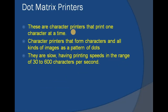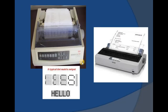Dot matrix and daisy wheel are character printers that print one character at a time. We also have line printers that print one line at a time. In dot matrix printers, due to mechanical movement, one character is printed at a time. These character printers form characters and all kinds of images using a pattern of dots. Their capability ranges from 330 to 600 characters per second.